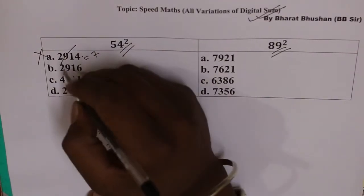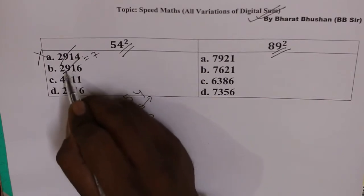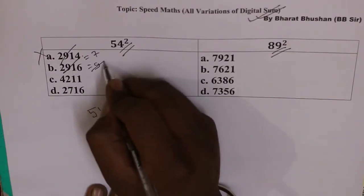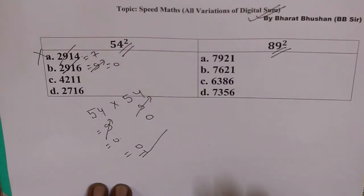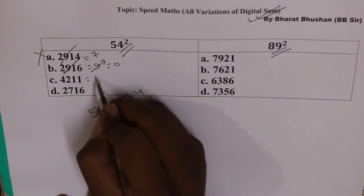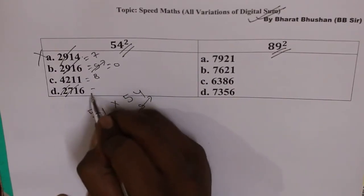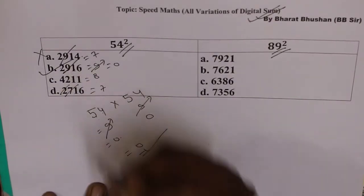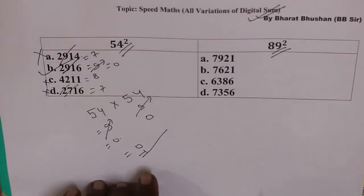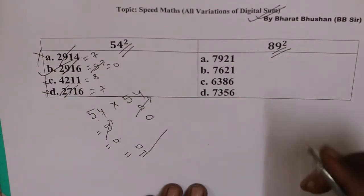Option A is guaranteed wrong. Next: 9 eliminate kar diya, 6 plus 2 plus 6 plus 2 is 8, plus 1 is 9, 9 eliminate kar diya, so 0 — option B can be the answer, but not until we check C and D. 4 plus 2 is 6, plus 2 is 8, plus 7 is 9, 6 plus 1 is 7. So C and D are not the answer because their digital sum is not 0. Therefore B is the correct answer.